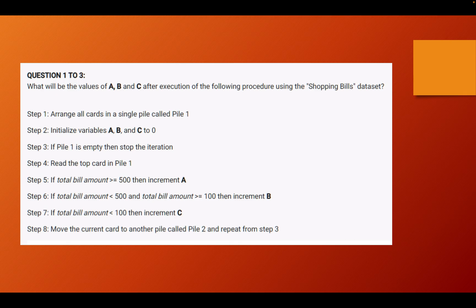Increment basically means that you should add plus 1 to the existing value of A. So if you see one card and then you go and read the next card and that also has an amount greater than or equal to 500 then you increase the existing value of A by 1. Similarly step 6 says that if the total bill amount is less than or equal to 500 and the total bill amount is greater than or equal to 100 then increment B.